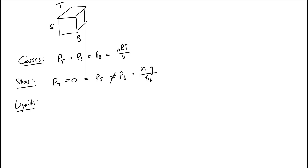Now let's look at the pressure in a liquid. I'm going to repeat the drawing of my little cube. If we take the top off the water will not jump out, we know that. But if we drill a small hole just below the top, the water will actually be pushed out. If we drill a hole the same size some distance lower down close to the bottom, the water will actually be pushed out further than at the hole near the top.